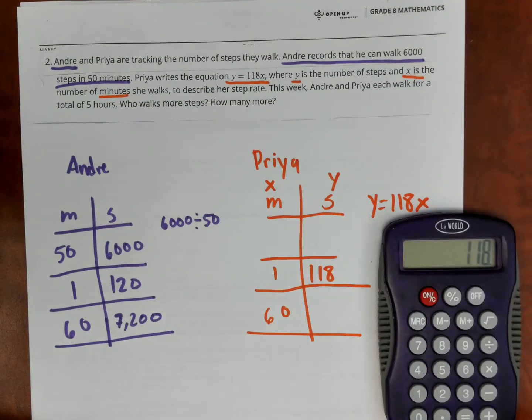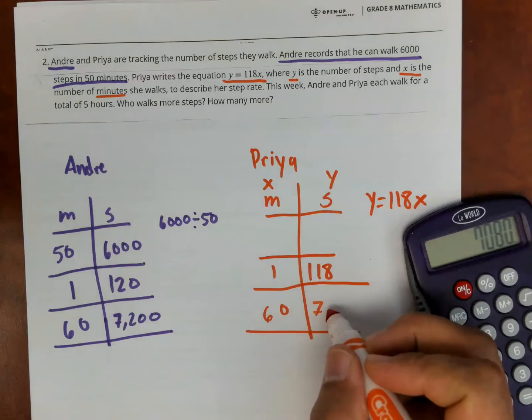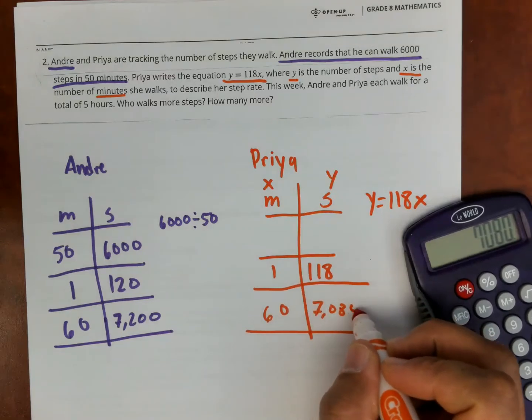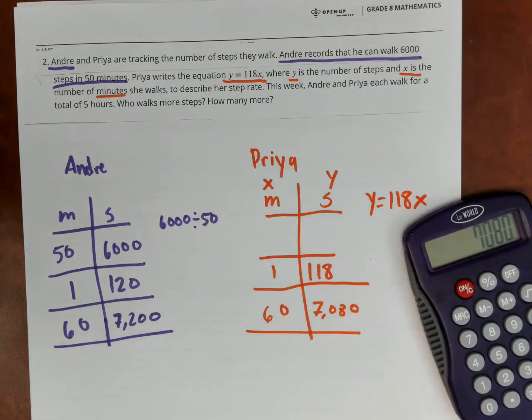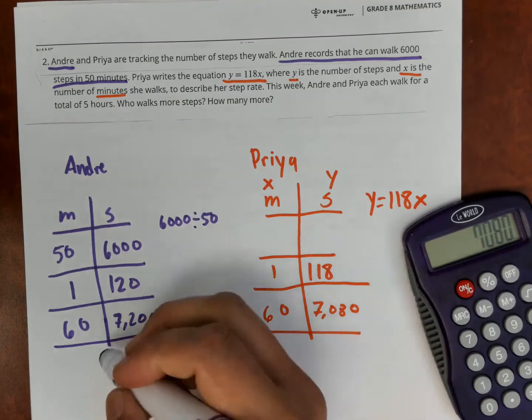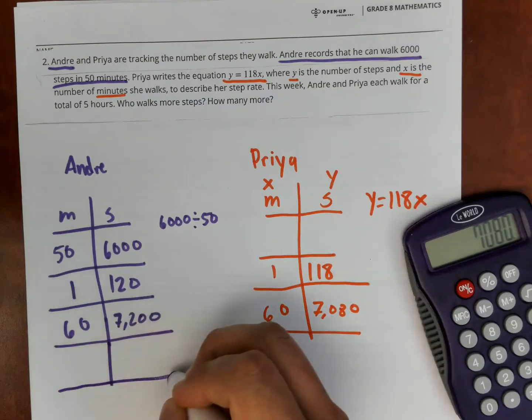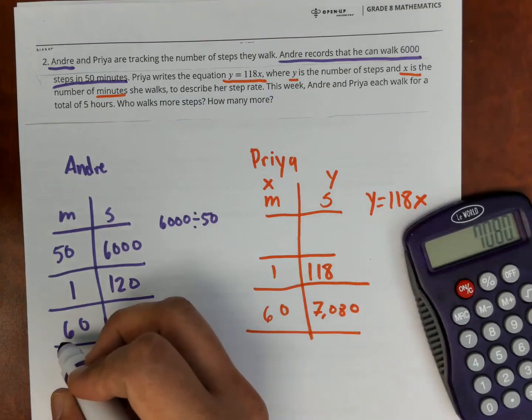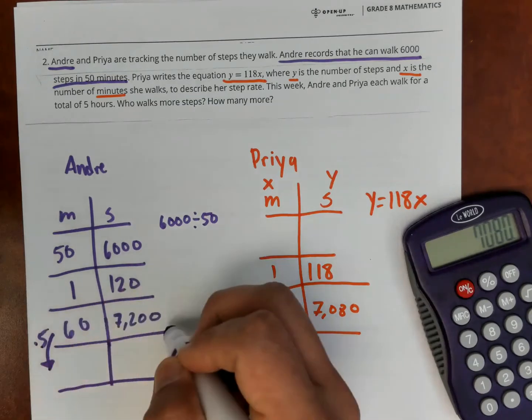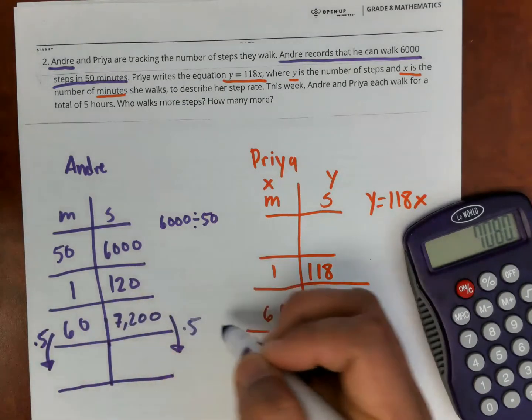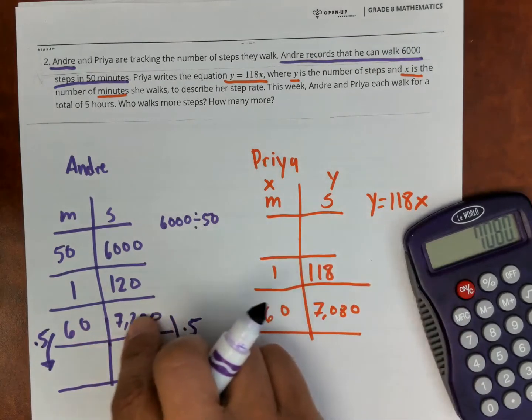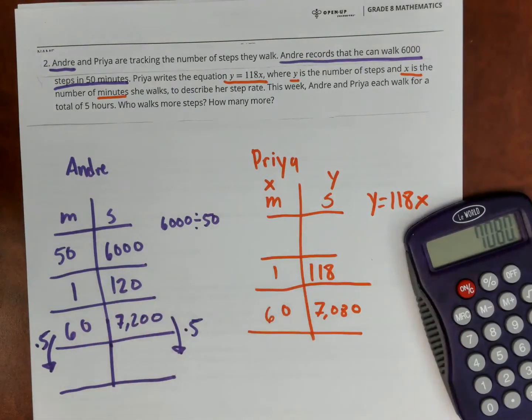For Priya, I'm going to do 60 times 118 and I get 7,080 steps. And that's for just one hour. So to find the problem that the question is asking me for five hours. So what am I going to do? I'm going to do 60 times this number times five, this number times five. This row here is the one hour row. So I'm going to do that times five. Same thing for Priya.